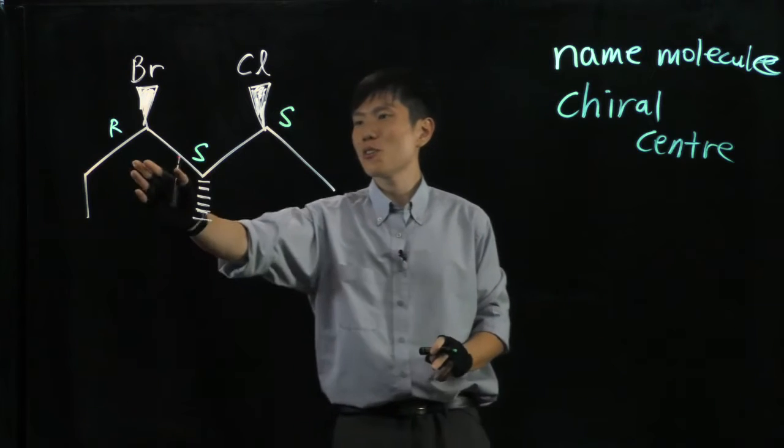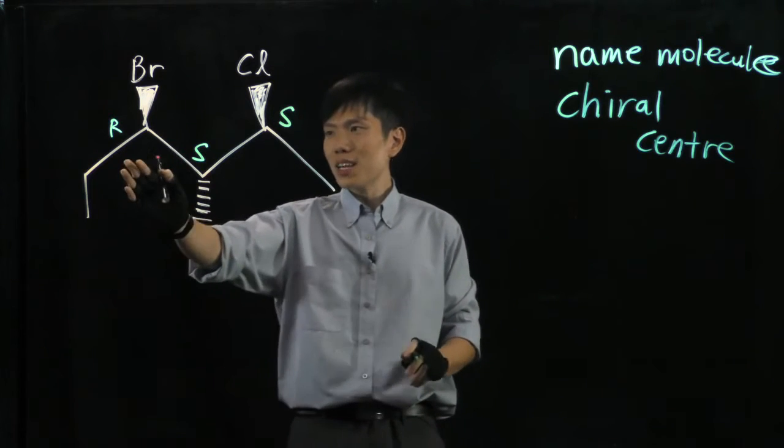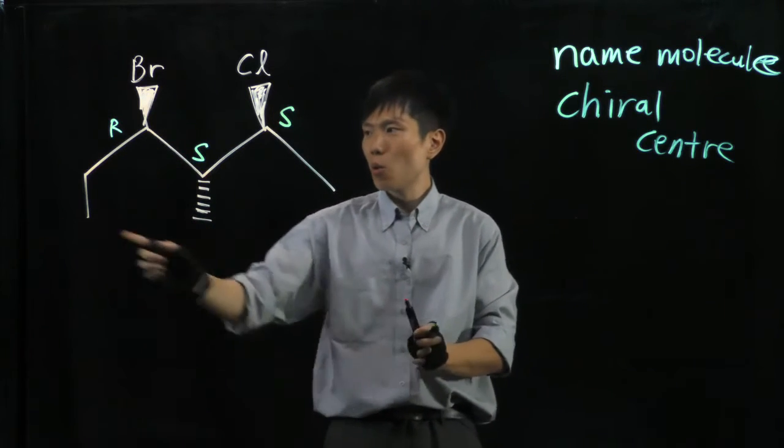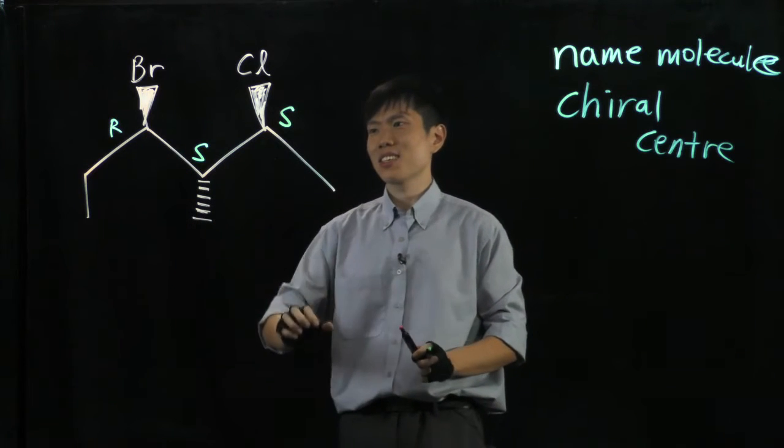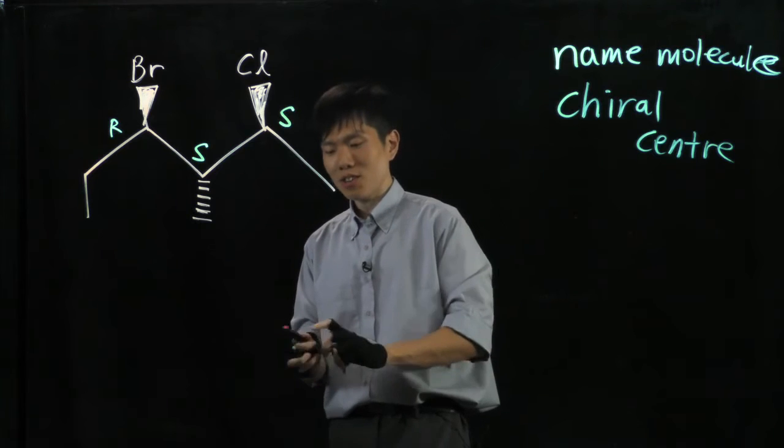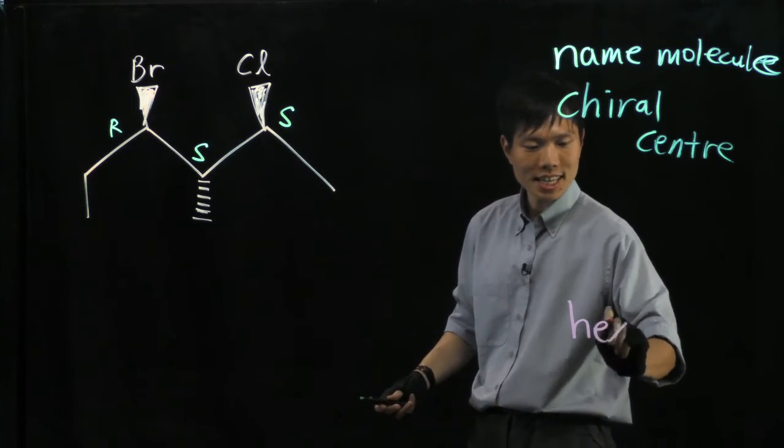Okay? So next we decide which is the longest chain. Again, 1, 2, 3, 4, 5, 6. Right? 6 atoms here. So that must be a hexane.